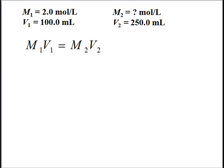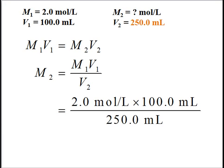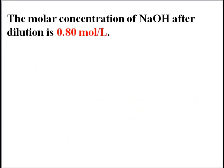We start by writing the dilution formula, then solve it for the unknown quantity, M2. M2 equals M1V1 over V2. M1 is 2 moles per liter, V1 is 100 milliliters, and V2 is 250 milliliters. The unit milliliters cancels from the top and bottom of the fraction. Calculating gives an answer of 0.8 moles per liter. So the molar concentration of NaOH after dilution is 0.8 moles per liter.